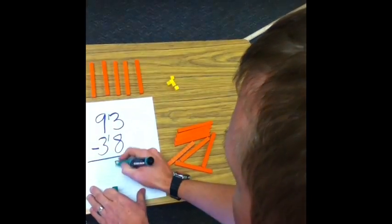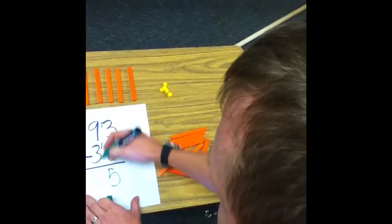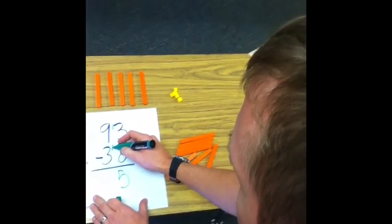So 13 minus 8 is 5. 9 minus 3 plus 1 more is 4. 9 minus 4 is 5.